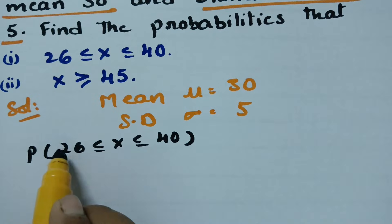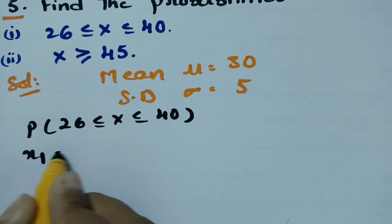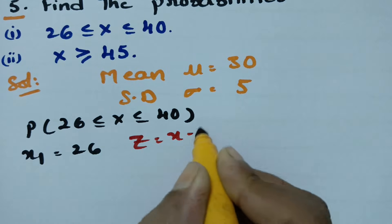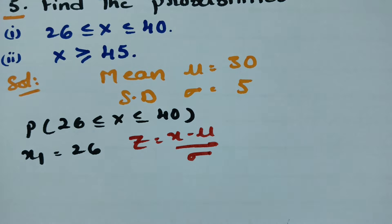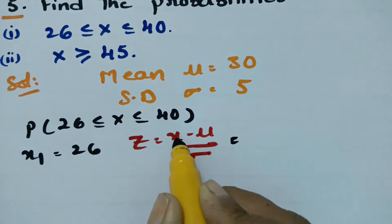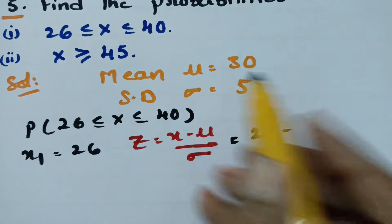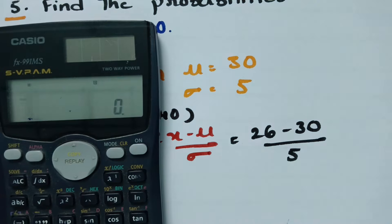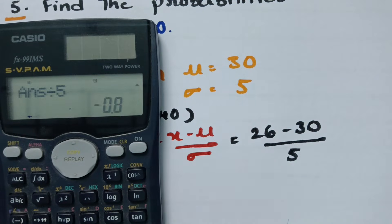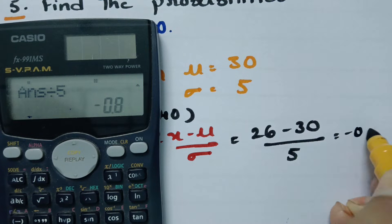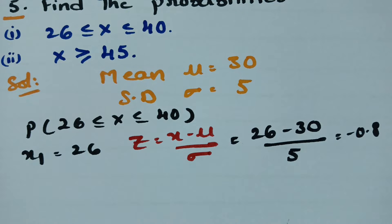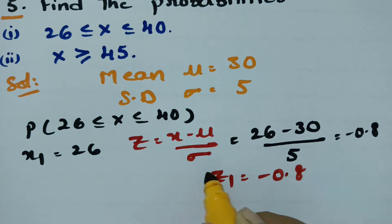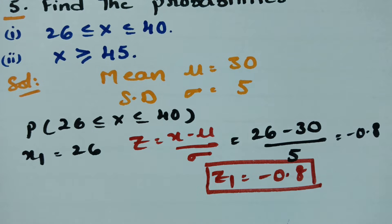First, taking x1 = 26. The formula is z = (x − μ) / σ. Substituting: z1 = (26 − 30) / 5 = −4/5 = −0.8. So z1 = −0.8.